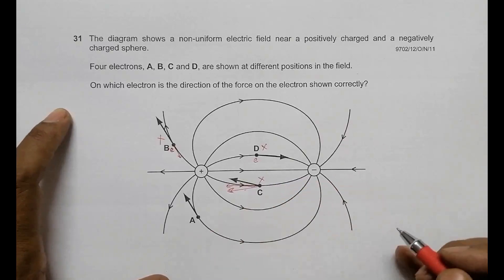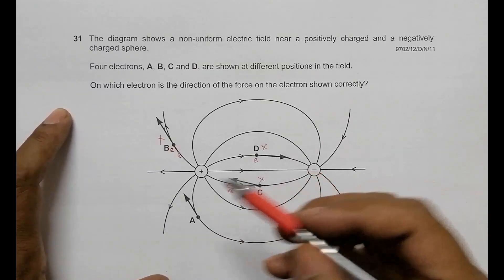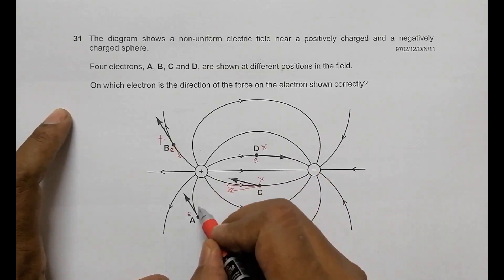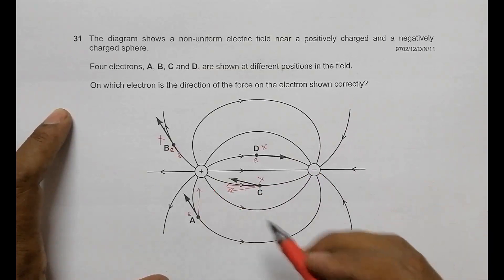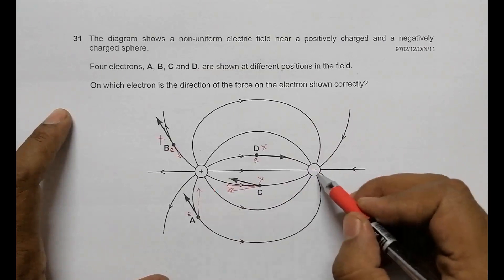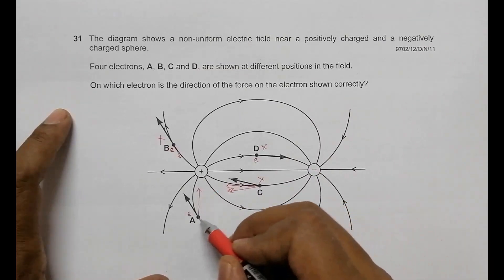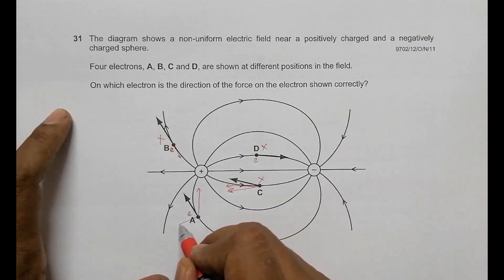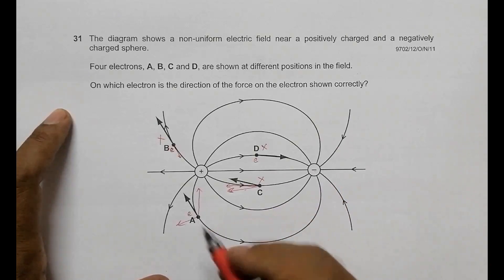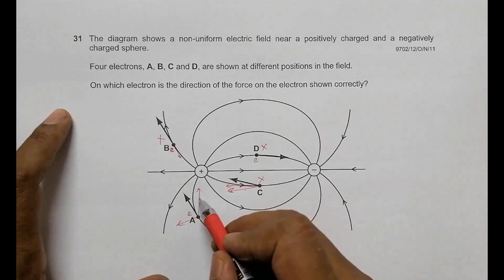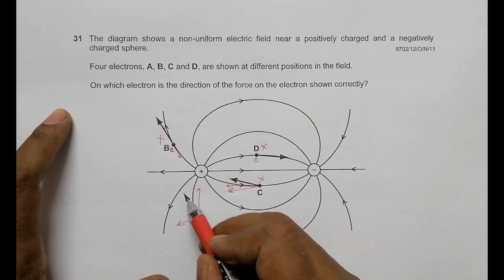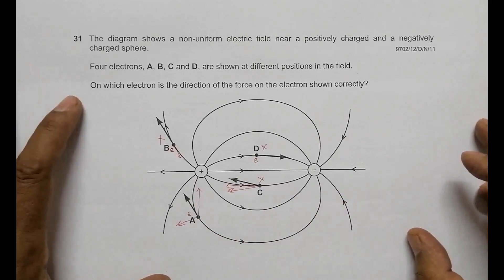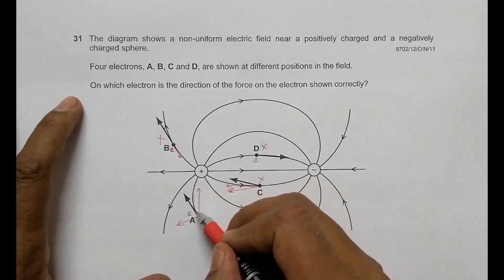For position A, the electron is attracted by the positive sphere in one direction, and there is also a force from the negative sphere. The direction shown for A could be the resultant of these two forces - the attraction toward the positive sphere and the repulsion from the negative sphere. So A should be the correct choice.